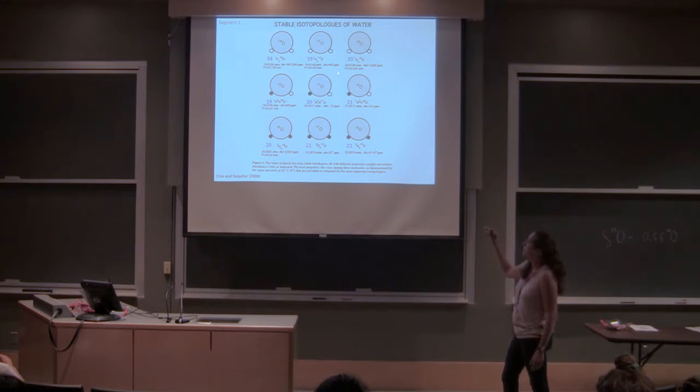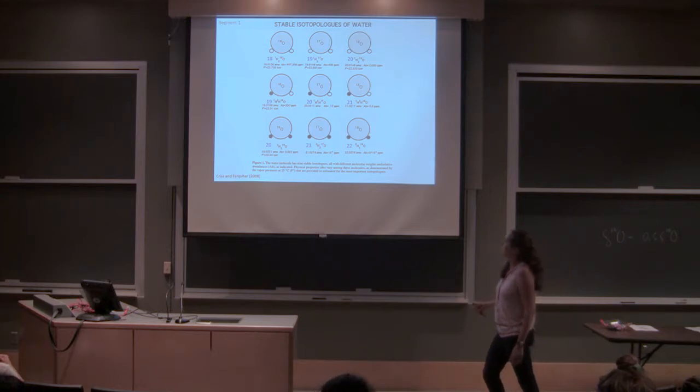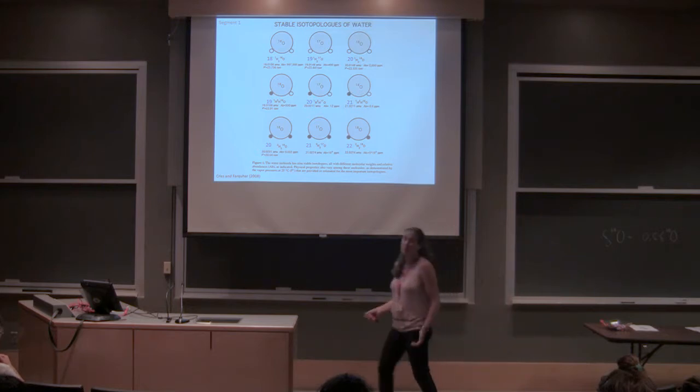So we're at 400 ppm for this isotopologue of water, okay? So it's just a matter of what's actually abundant and actually what's possible to sort of measure.